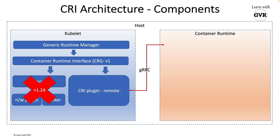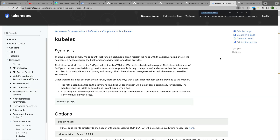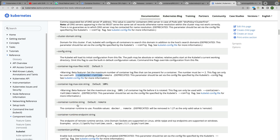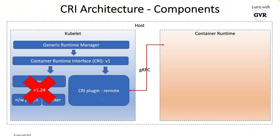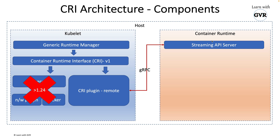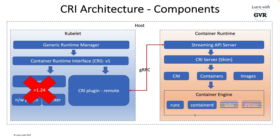Kubelet has two options: Docker, which was deprecated in 1.24, and the CRI plugin, which is via this interface. This plugin opens an option to connect to any of the container runtimes approved in the CNCF landscape. In the kubelet documentation, the default container runtime is now remote. This remote connects via gRPC, and internally the container runtime has a streaming API and shim API, which handle CNI, containers, and pause images.